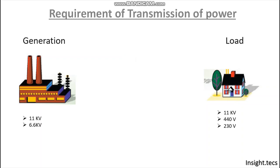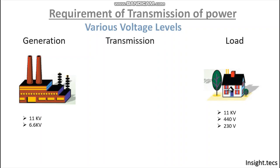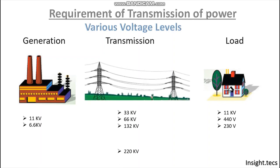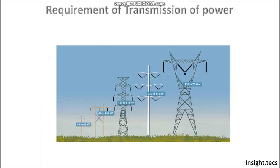By increasing the voltage, we can transmit the power generated at the generating station to the load. There are different voltage levels for transmission: 33 kV, 66 kV, 132 kV, 220 kV, 400 kV, 765 kV, and 1200 kV. At 1200 kV is the largest voltage at which India is currently transmitting power. By changing the voltage levels, the height of the towers also increases, as clearly seen in the picture.